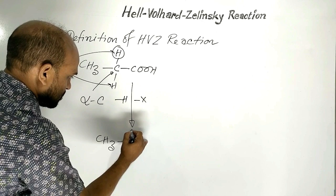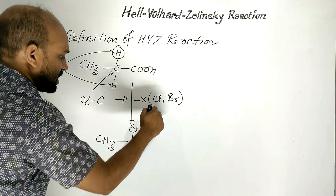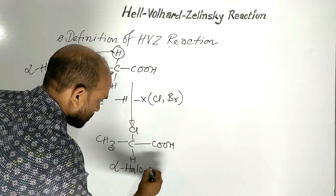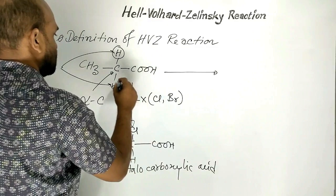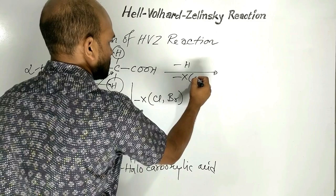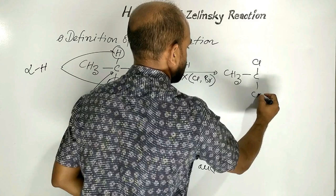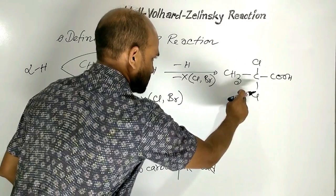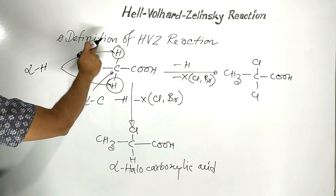When alpha hydrogen atoms are replaced by halogen atoms such as chlorine or bromine, we get alpha halocarboxylic acid. For example, replacing one hydrogen gives alpha-chloropropanoic acid, and replacing another gives alpha-alpha-dichloropropanoic acid.